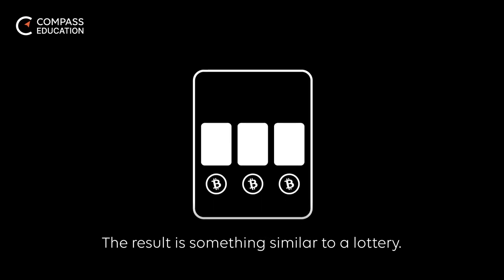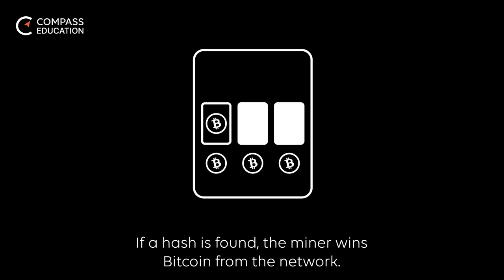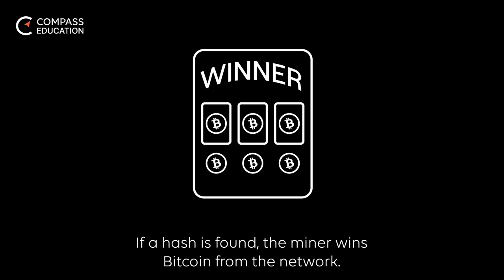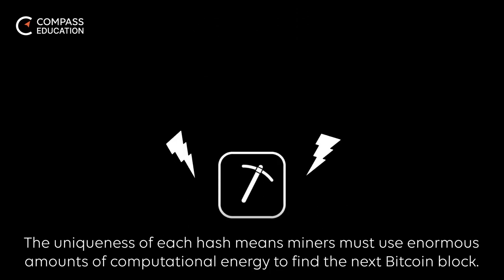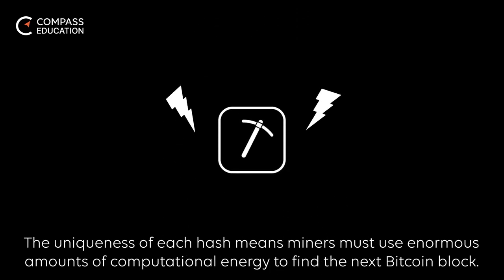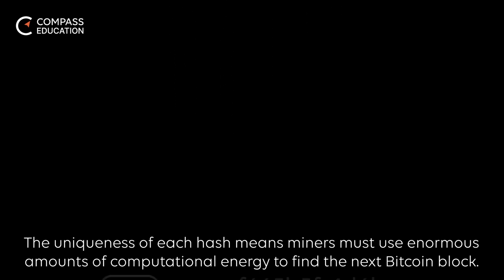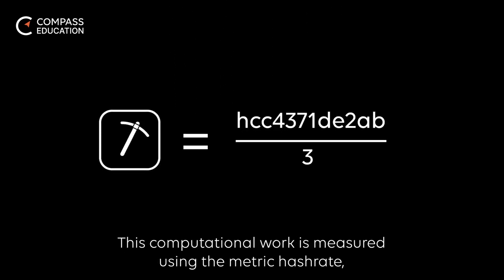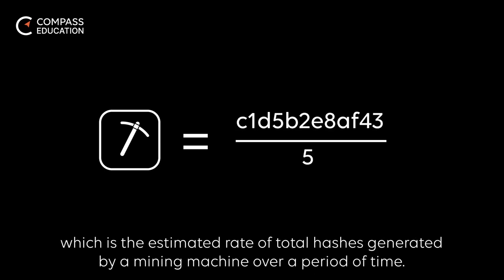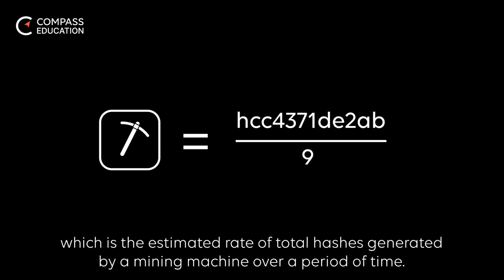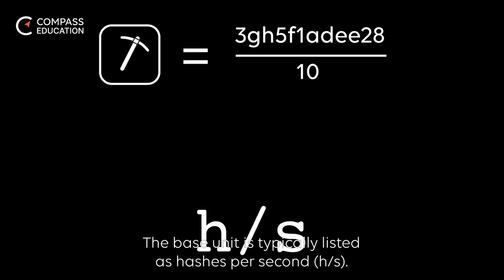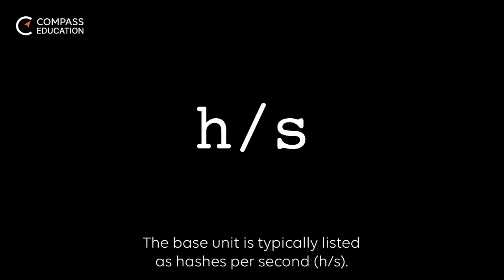The result is something similar to a lottery. If a hash is found, the miner wins Bitcoin from the network. The uniqueness of each hash means miners must use enormous amounts of computational energy to find the next Bitcoin block. This computational work is measured using the metric hashrate, which is the estimated rate of total hashes generated by a mining machine over a period of time. The base unit is typically listed as hashes per second.